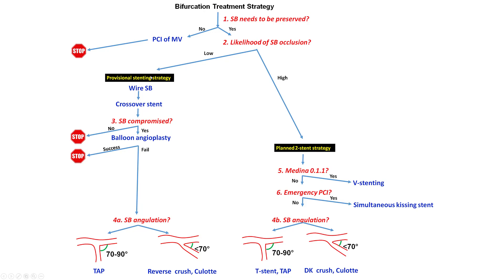To summarize: provisional stenting strategy is a relatively simple strategy but has many nuances. It is the strategy of choice when either the side branch does not need to be preserved or has low likelihood of occlusion. In the best-case scenario the stent is placed in the main vessel jailing the side branch and no problem occurs — in which case we are done. If there is compromise of the side branch, the first step is to rewire through a distal strut after POT is done, then perform balloon angioplasty — which in many cases is sufficient for restoring flow. When that does not succeed and there is significant residual lesion in the branch, a second stent may need to be placed.